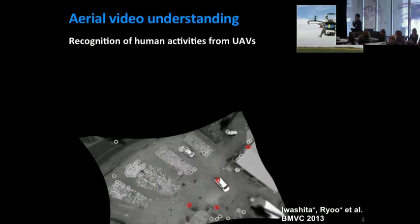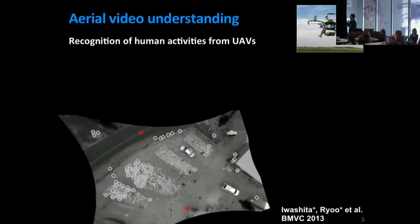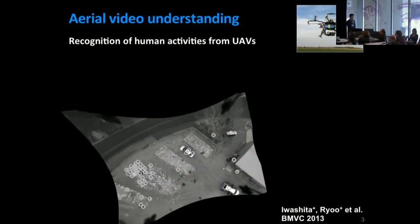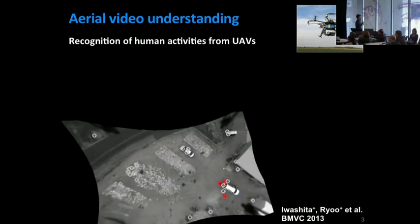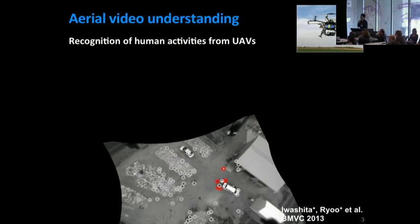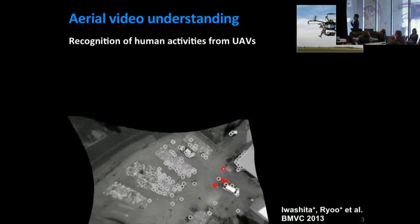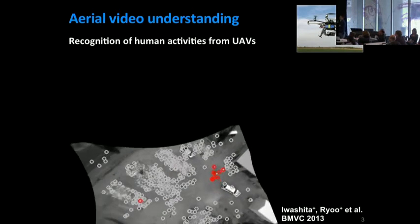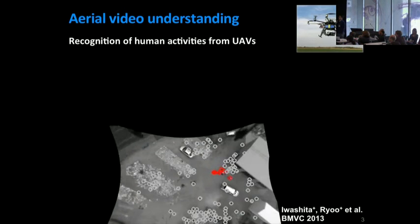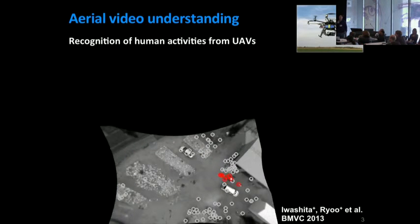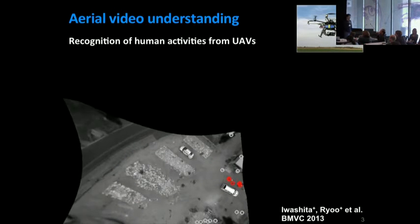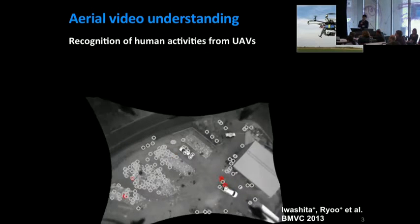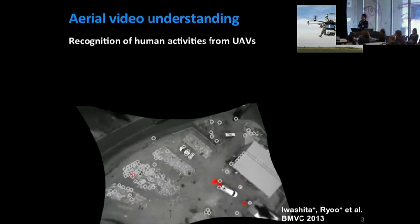Here's another example. This is a video taken from an unmanned aerial vehicle and we stabilized it. As you can see, there are many kinds of noise as well as real humans on the ground, and the goal was to recognize humans as well as what they are exactly doing.